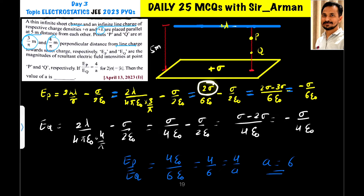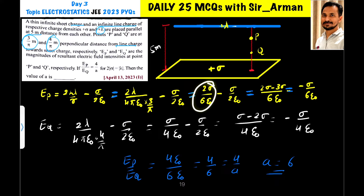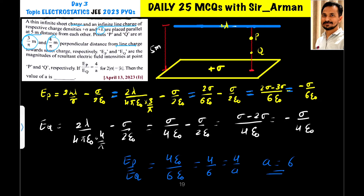With lambda equals 2 sigma, 2 threes are 6 and pi and pi cancel, leaving 6 epsilon naught in the denominator. So we have 2 sigma by 6 epsilon naught minus sigma by 2 epsilon naught. Taking LCM as 6 epsilon naught gives 2 sigma minus 3 sigma over 6 epsilon naught, which equals minus sigma by 6 epsilon naught. We are only interested in the magnitude, so EP equals sigma by 6 epsilon naught.